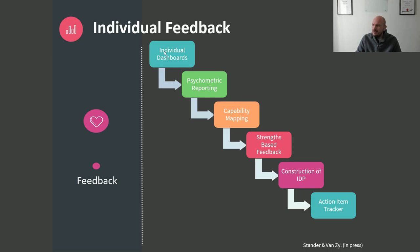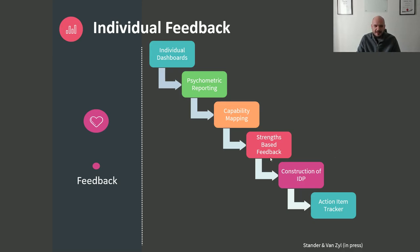Based on all the information gathered, we come up with a capability map so we know exactly what their propensity to perform is and how likely they are to progress to the next level. We give strengths-based feedback, highlighting how they're utilizing their strengths to function effectively. Based on all four aspects, we then develop an IDP — an individual development plan or personal development plan — which summarizes where they want to go in their careers, where they are now, and the steps to get there, utilizing their strengths and capabilities. We also construct a way to actively track goal progression and well-being.